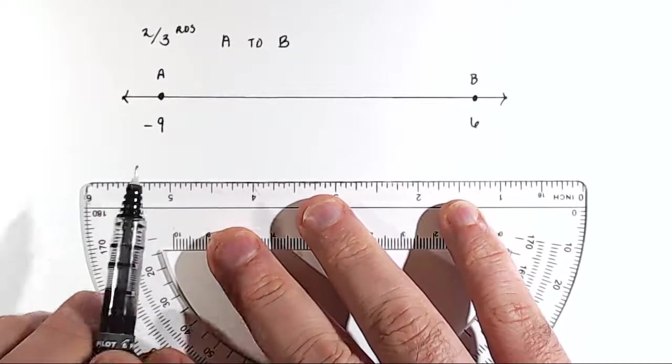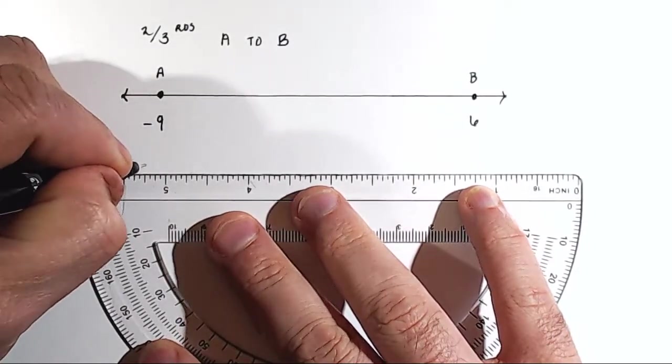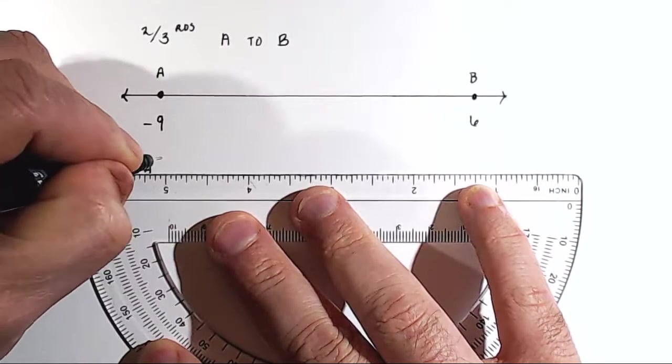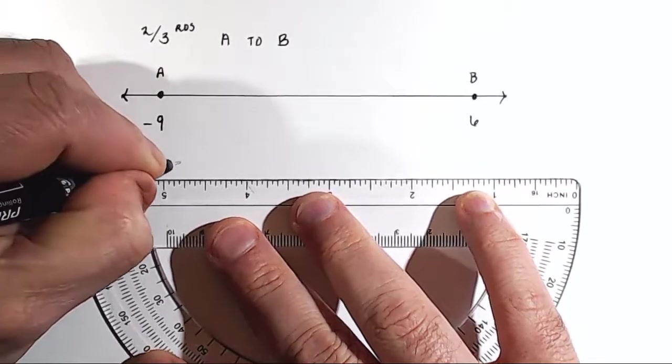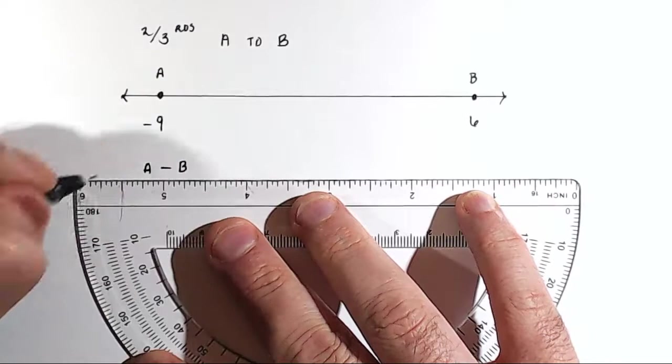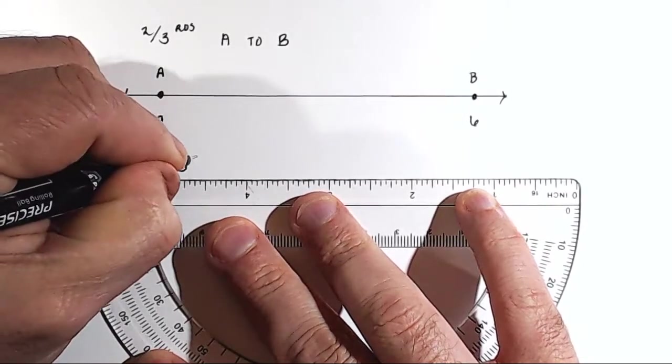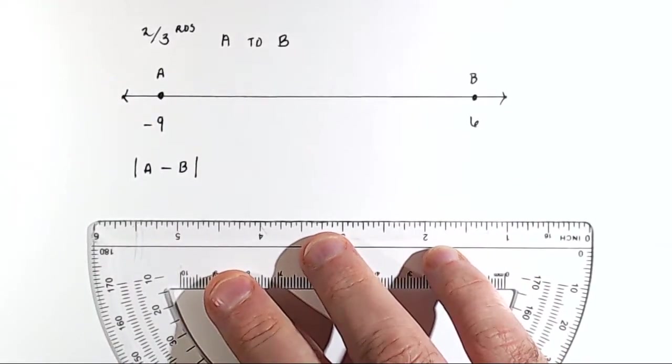So what we would do is we would say, what is the absolute difference between point A and point B? We would put that in absolute value brackets, like this.